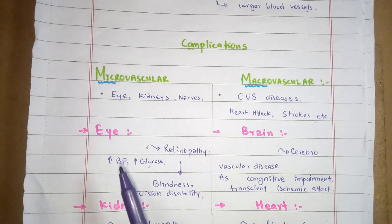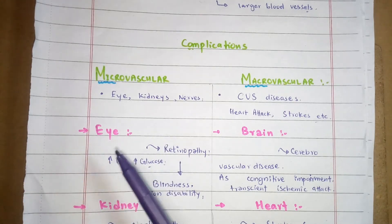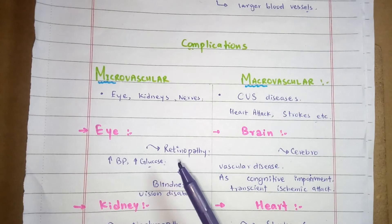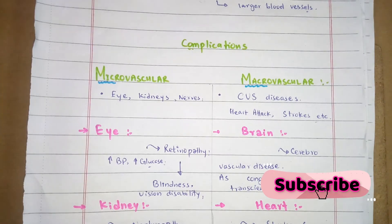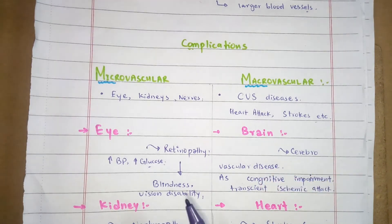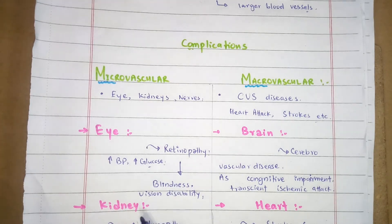In the case of microvascular complications, damage to the eye is called retinopathy. High blood glucose and high blood pressure can damage eye blood vessels, resulting in retinopathy which may lead to blindness or vision disability. Cataracts and glaucoma can also be seen as complications of microvascular diabetes.